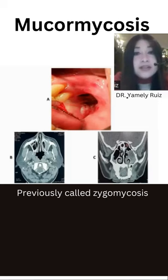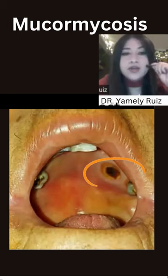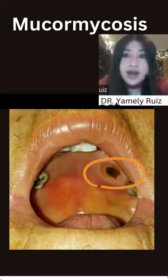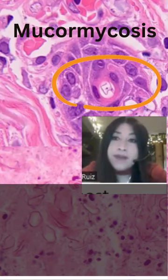Clinically, mucormycosis or zygomycetes infections are associated with a necrotic area that can begin as an ulcer. This ulcer has rapid growth with bad borders, and a necrotic background — this is characteristic of the infection.